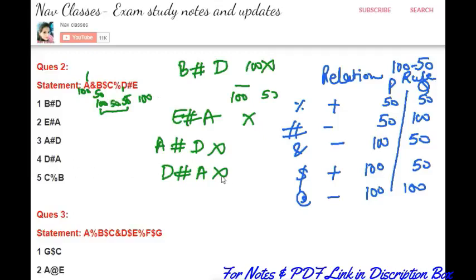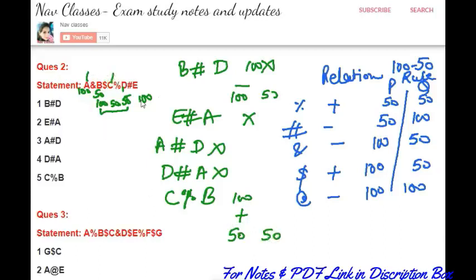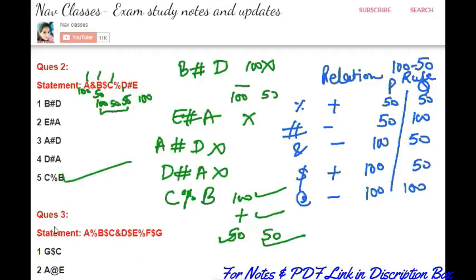For C%B: percent means positive relationship, 50-50 relation. Going from C to B — C has 50 and B has 100 — yes, we can merge (first condition satisfied). Dollar means positive — satisfied. Can B spend 50 out of 100? Yes. Can C spend 50 out of 100? Yes. This conclusion is following — this is your answer for question 2.